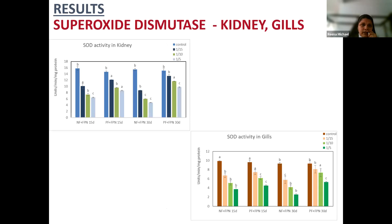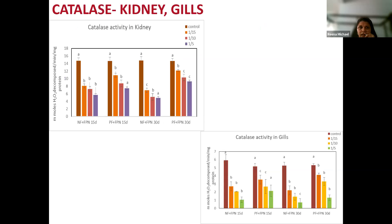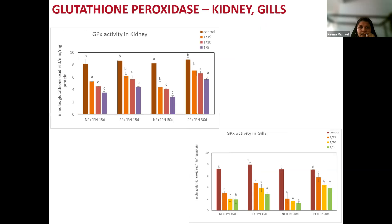Coming to the results: The graphs show the activity of superoxide dismutase, catalase, and GPX in kidney and gills. SOD, CAT, and GPX activity in the kidney and gills of fipronil-treated fishes showed a significant reduction at all concentrations. Fishes fed with plant extract also showed a reduction, but their enzyme levels were higher compared to fishes fed with normal feed across all enzyme levels.